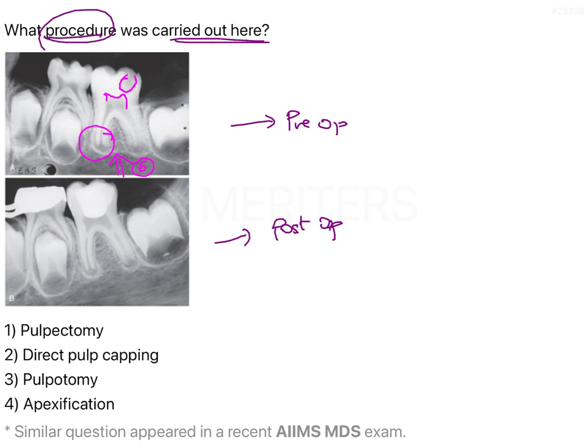In the post-op radiograph, what we see is that there is a filling material which is extending till the coronal portion of the tooth. The radicular pulp chambers are all intact. The root development has actually continued — the root length has increased from the pre-op to the post-op — though root closure is still not achieved. So the procedure most likely carried out here is a pulpotomy.